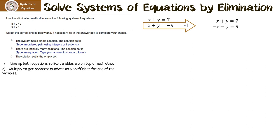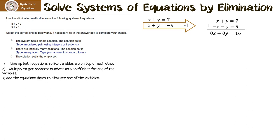The first equation I leave alone. For the second: negative 1 times x is negative x, negative 1 times y is negative y, and negative 1 times 9 is positive 9. Now when we add down to eliminate one of the variables, something interesting happens: x minus x is 0x, y minus y is 0y, and 7 plus 9 is 16.